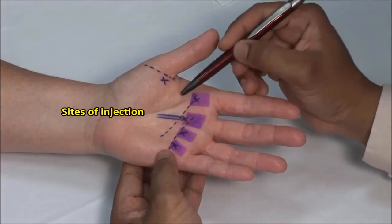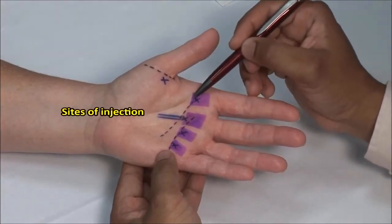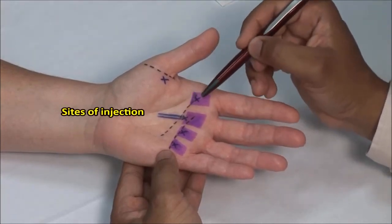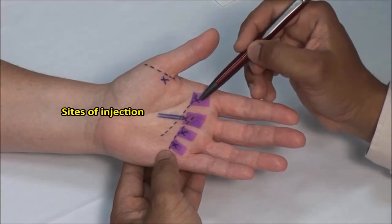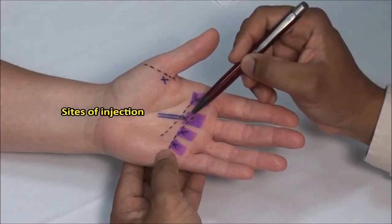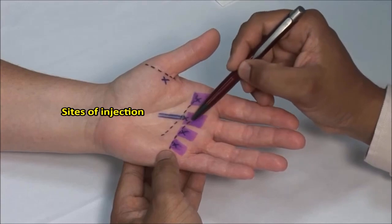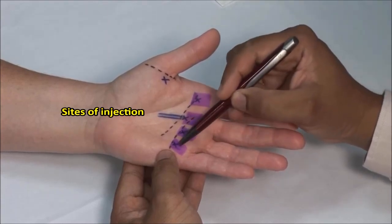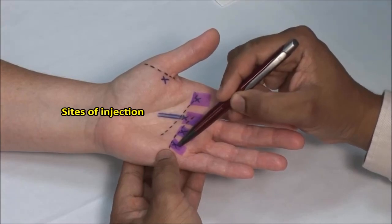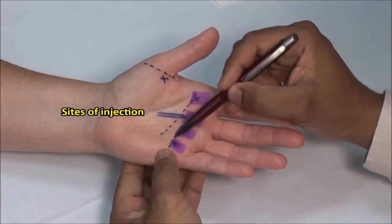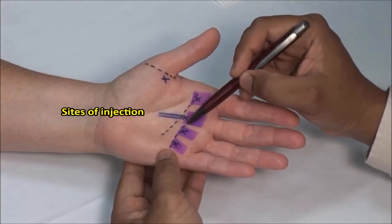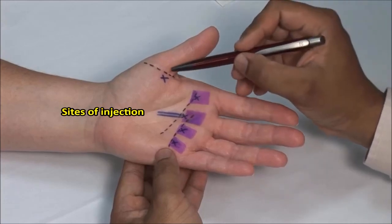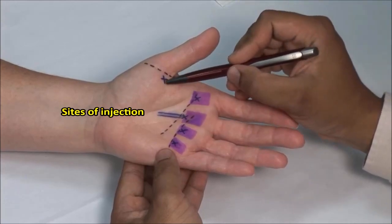The point for injection of the second flexor is just distal to the proximal transverse crease. For the third flexor it's halfway between the proximal and distal transverse creases, and for the fourth and fifth flexor tendons it is about one centimeter distal to the distal transverse crease. For the thumb flexor it's just proximal to the thumb MCP crease.